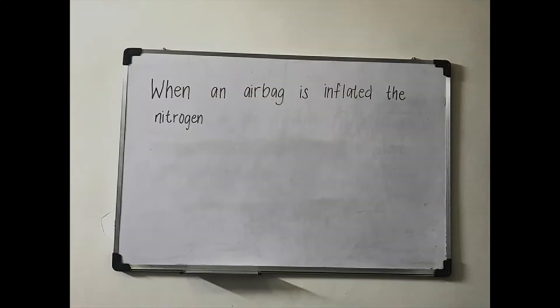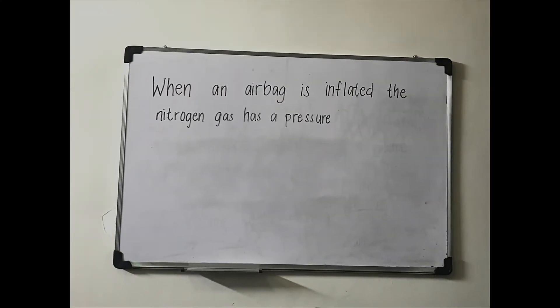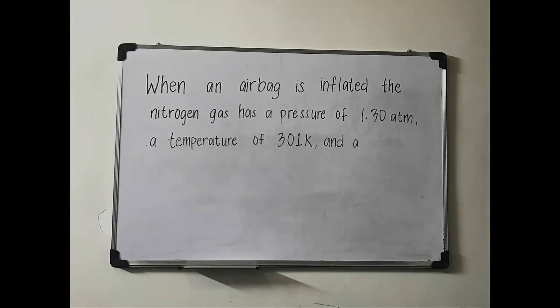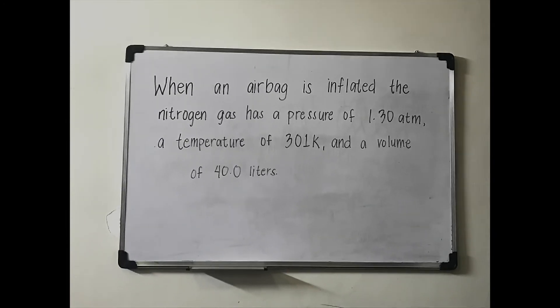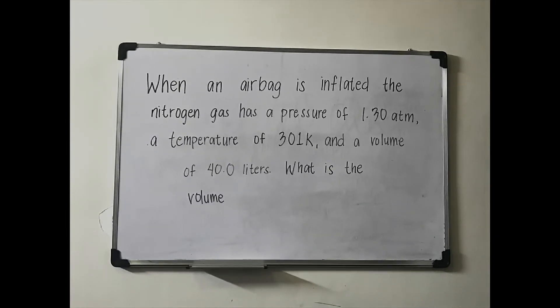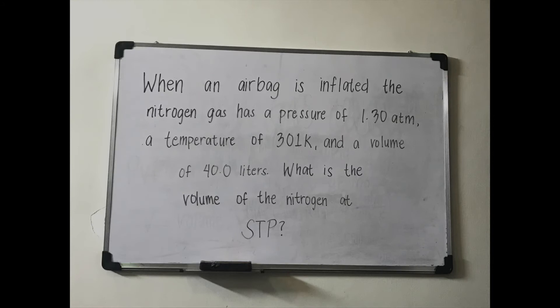When an airbag is inflated, the nitrogen gas has a pressure of 1.13 atm, a temperature of 301 K, and a volume of 40 liters. What is the volume of nitrogen at STP? Rearrange the equation to solve for N: N is equal to PV over RT.